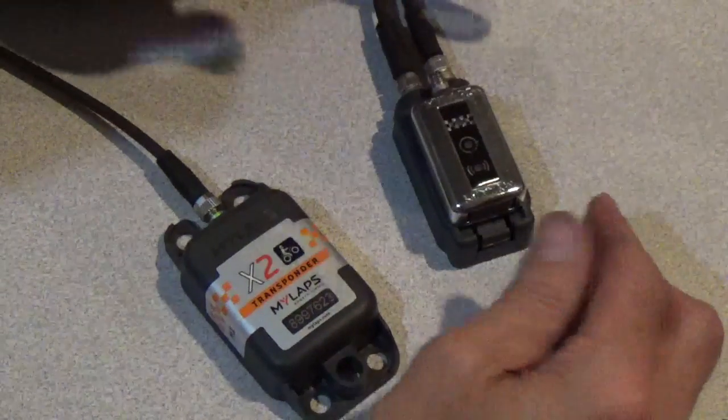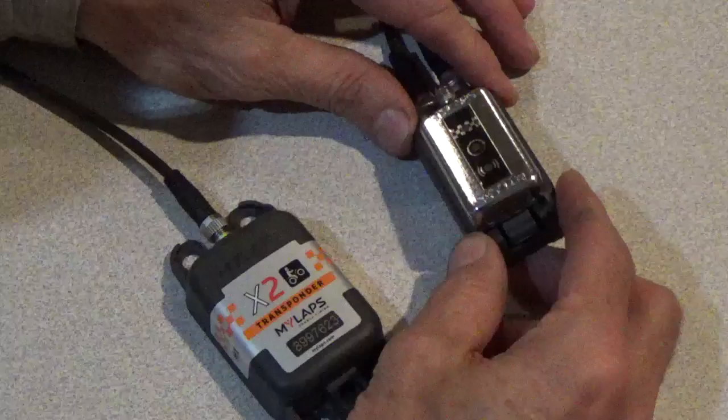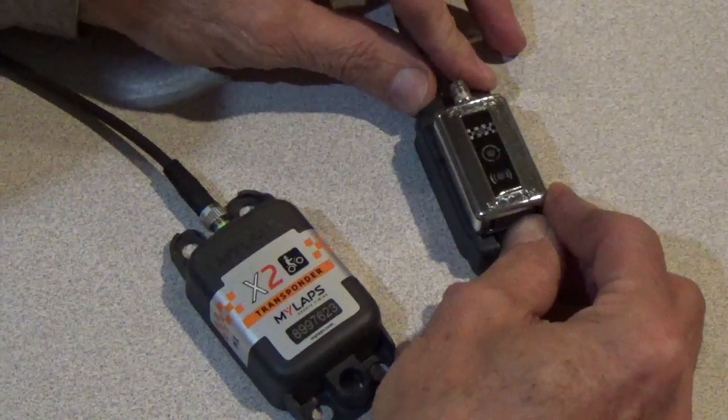At this point the race key can be removed. The race key is not needed but you should just leave it in there unless you need to take it out for some reason.